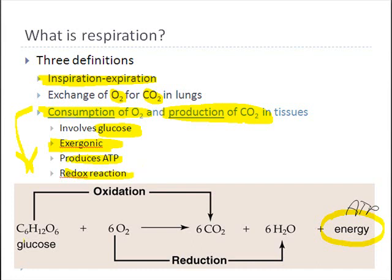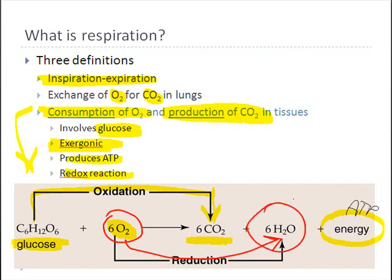In this particular example, we start out with glucose and oxygen. The glucose gets oxidized, meaning it loses hydrogen ions and electrons, and through a series of processes, out the other side we get carbon dioxide. Meanwhile, that oxygen gets reduced — it receives all the hydrogen ions and electrons from the glucose — and it becomes highly reduced in the form of a molecule we call water.